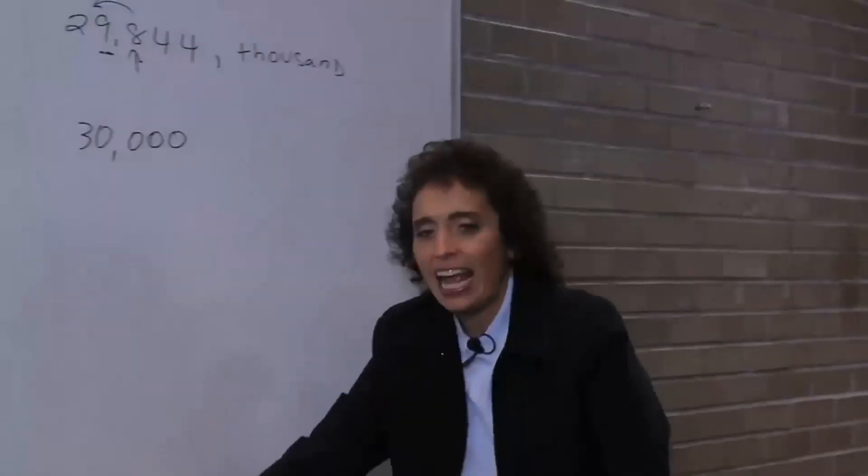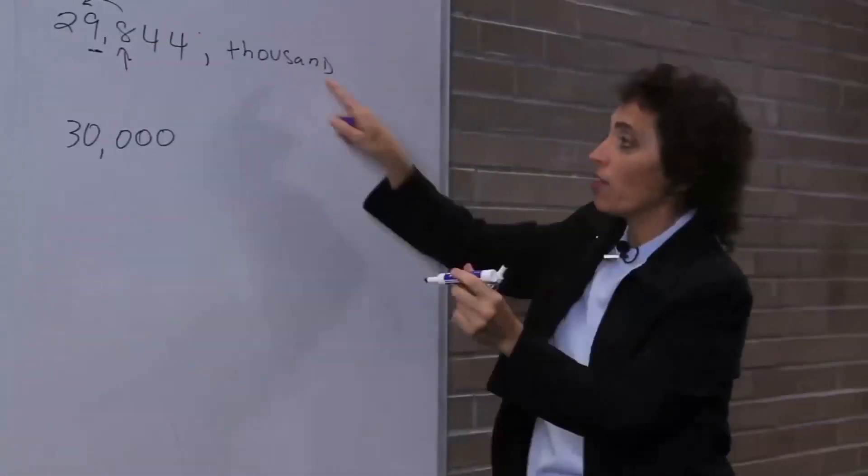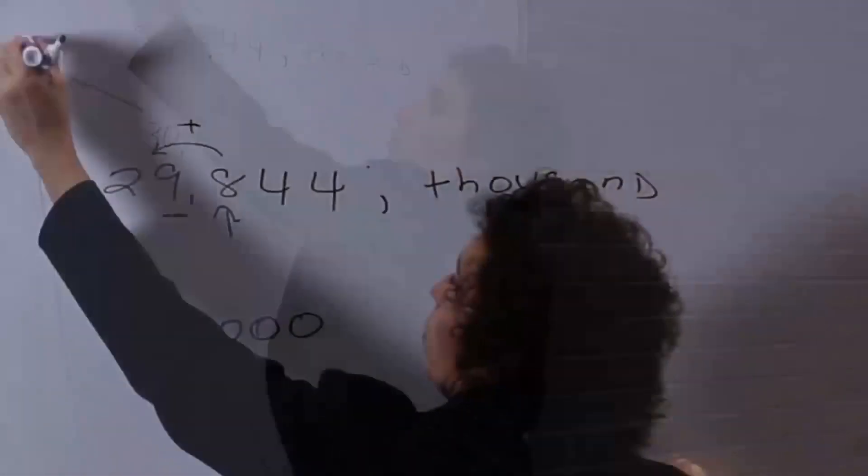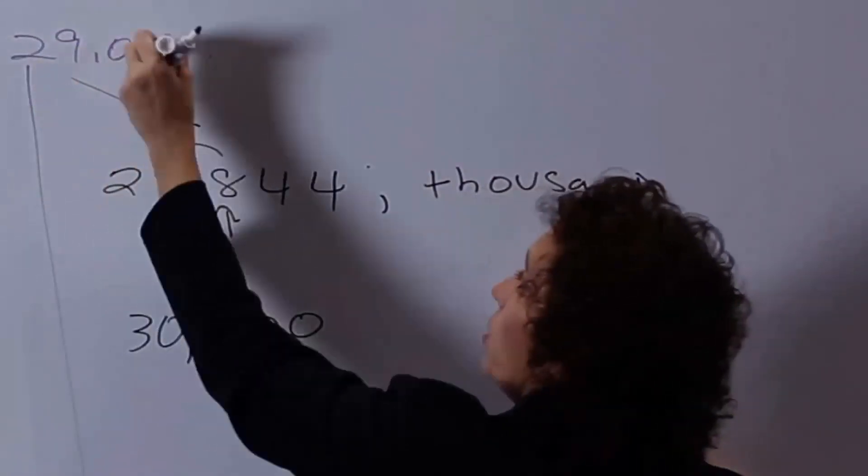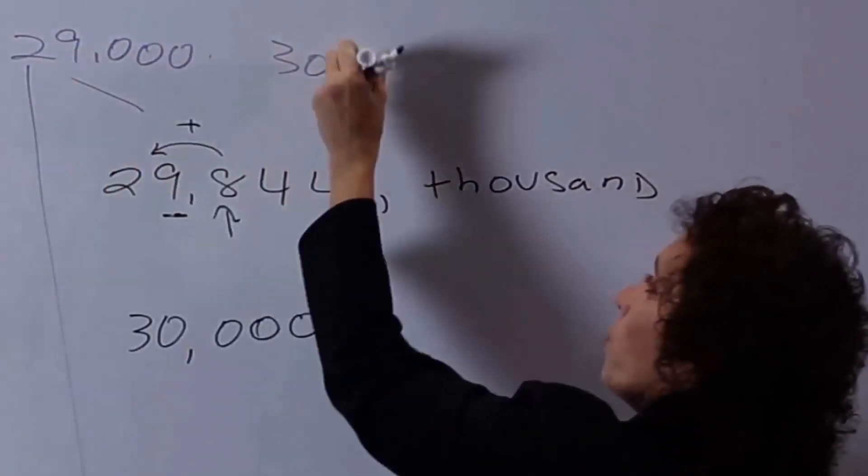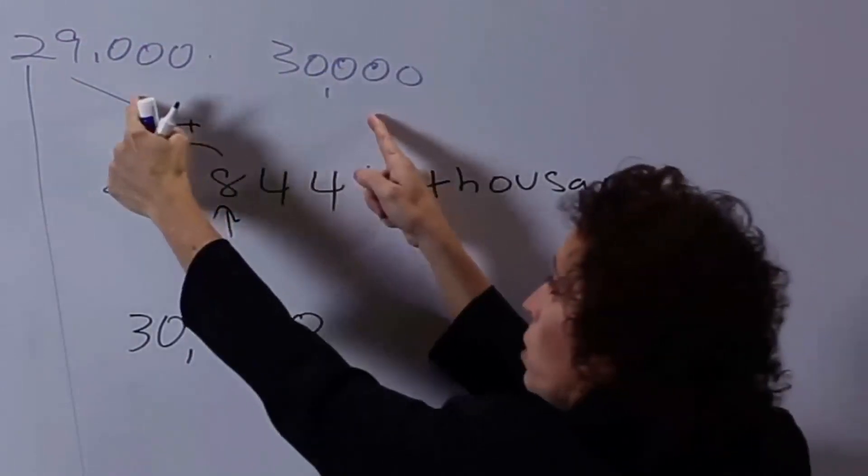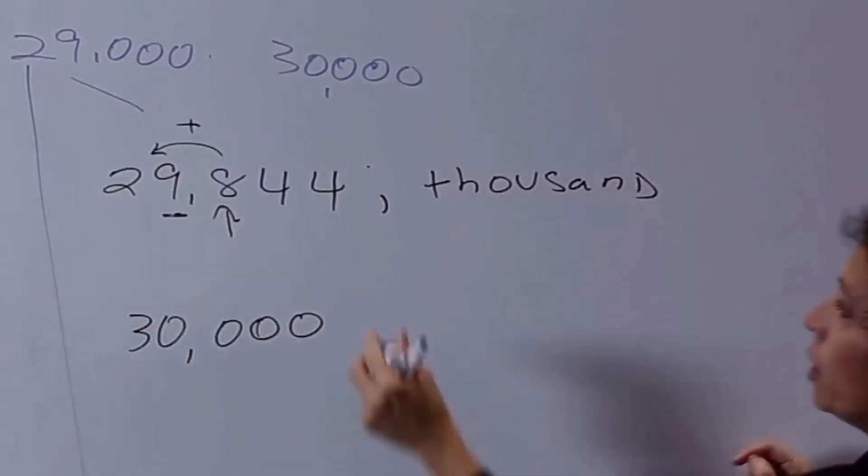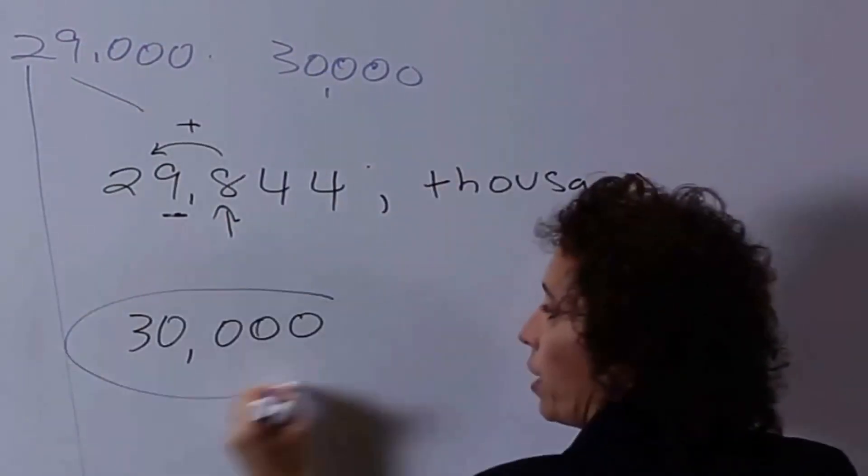Because again, what this is really asking me, since it's to the nearest 1,000, is: is this number closest to 29,000 or 30,000? Notice it's between those two numbers, but we want to know which one it's closest to, and it's closest to 30,000.